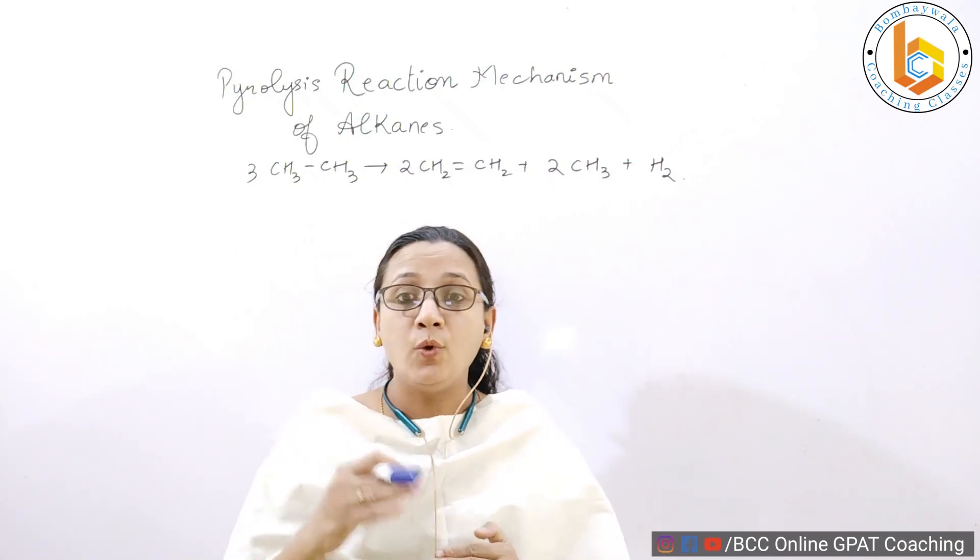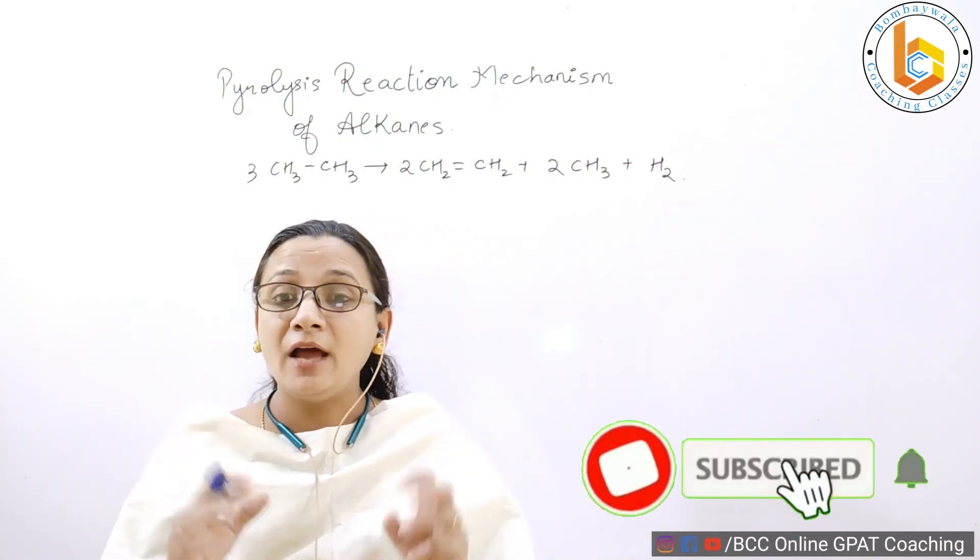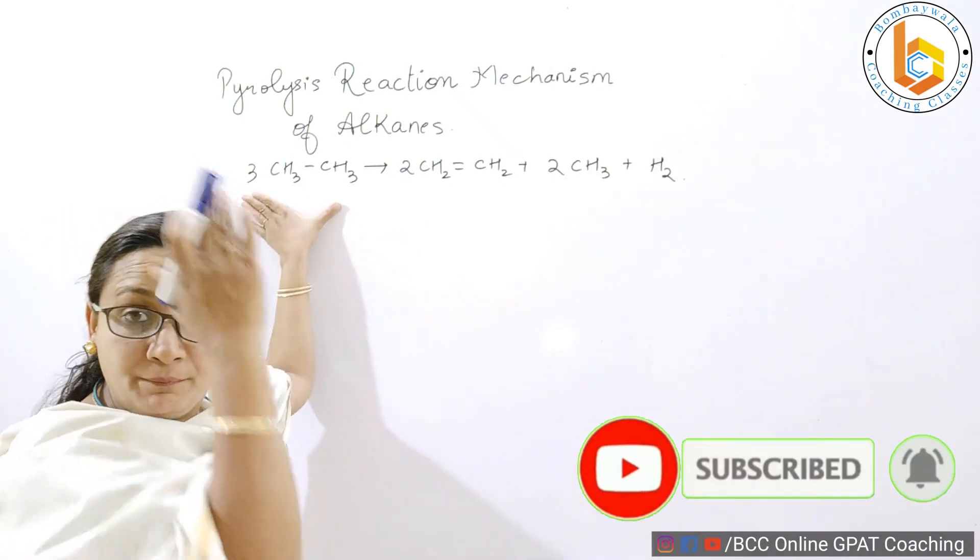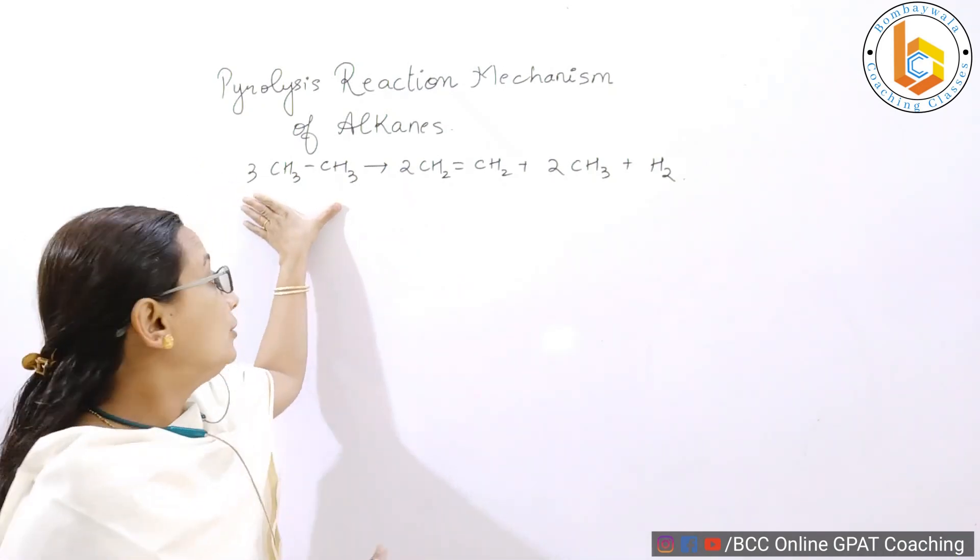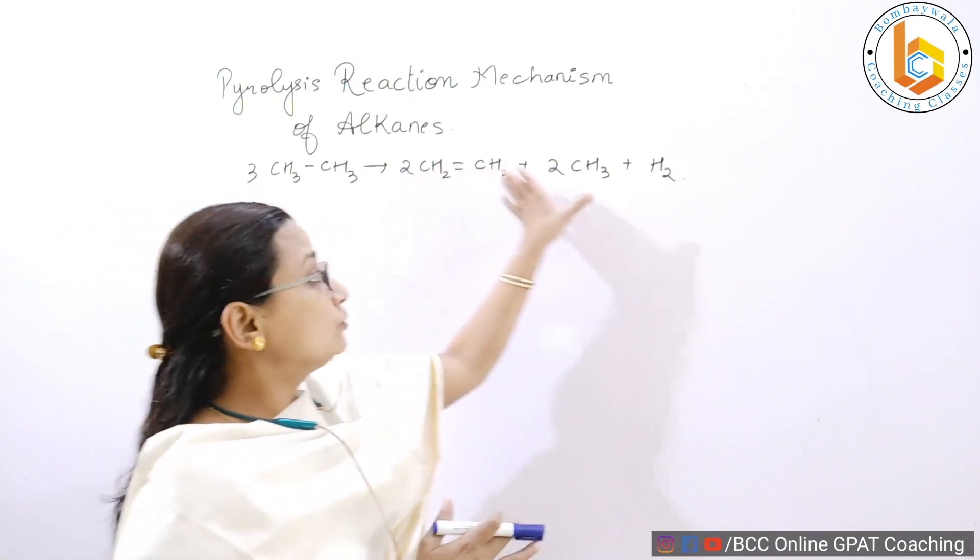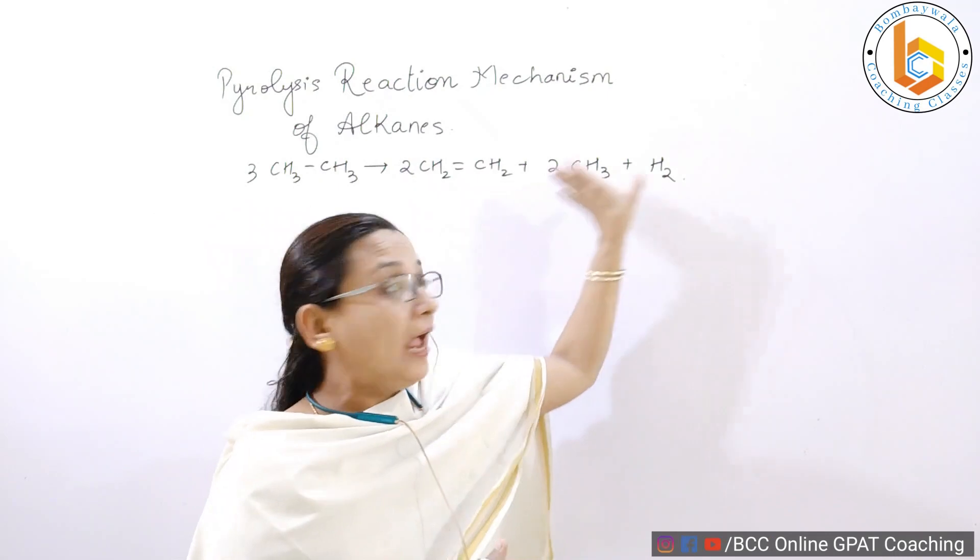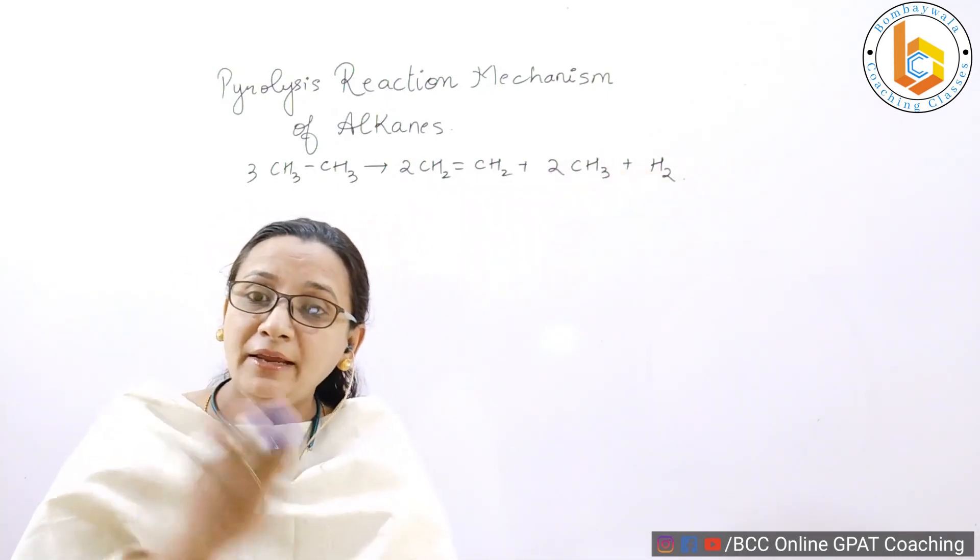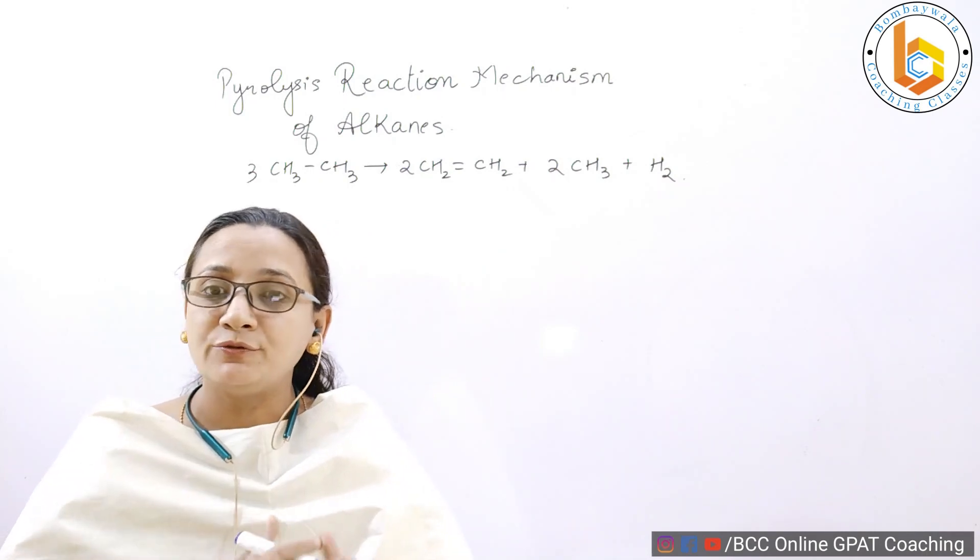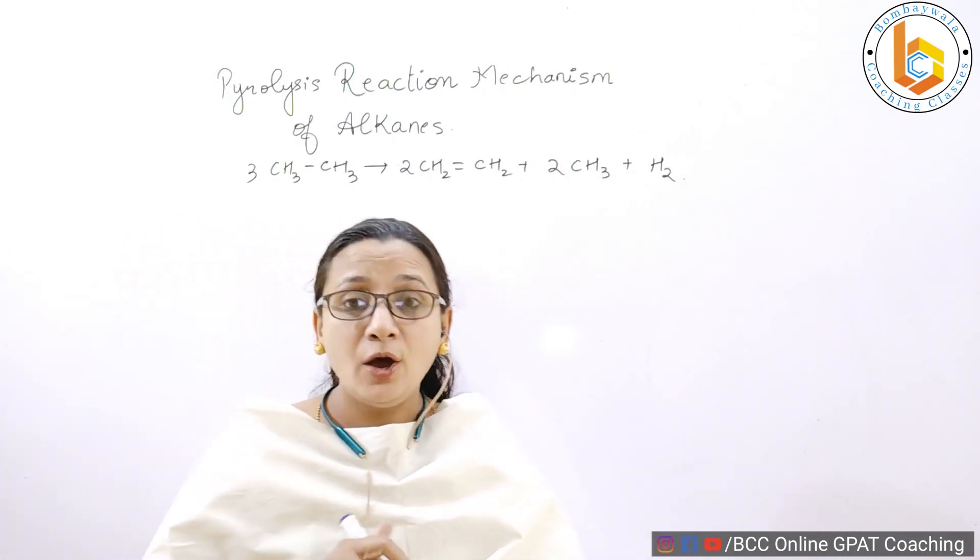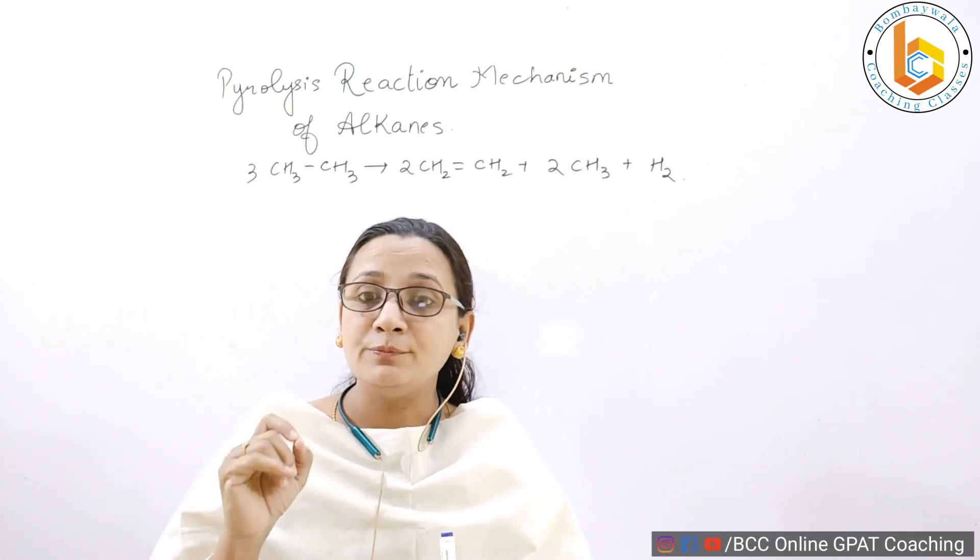My dear students, we have explained what is pyrolysis and how this reaction occurs. Ethane breaks down, cracks into ethene plus two molecules of methane and hydrogen. It is nothing but a lysis, a breaking down reaction in presence of heat. And in this video, we are going to talk about how exactly the mechanism proceeds.